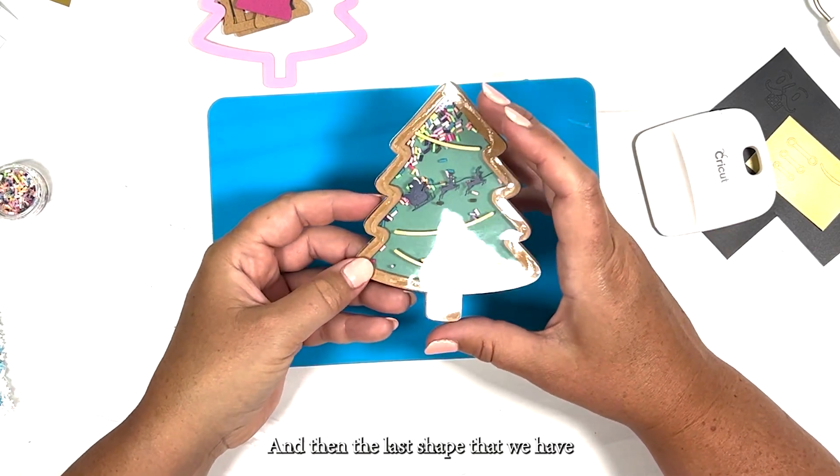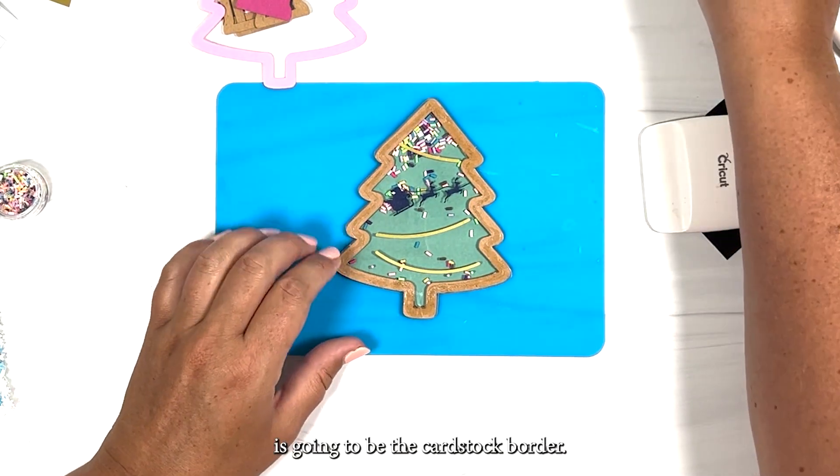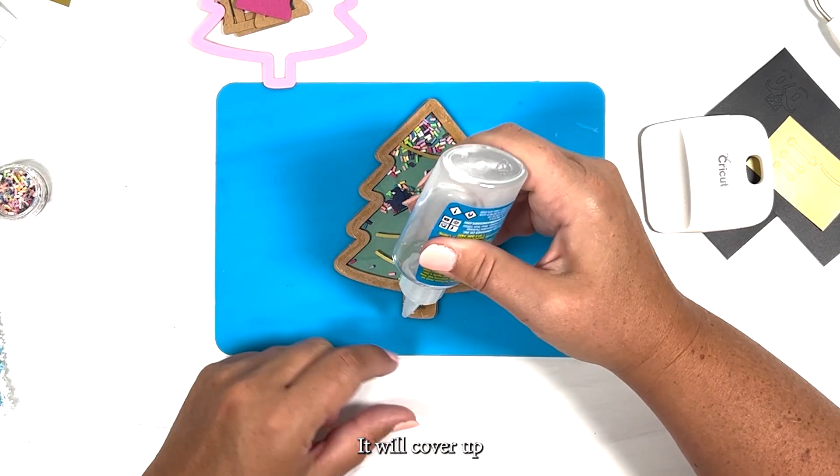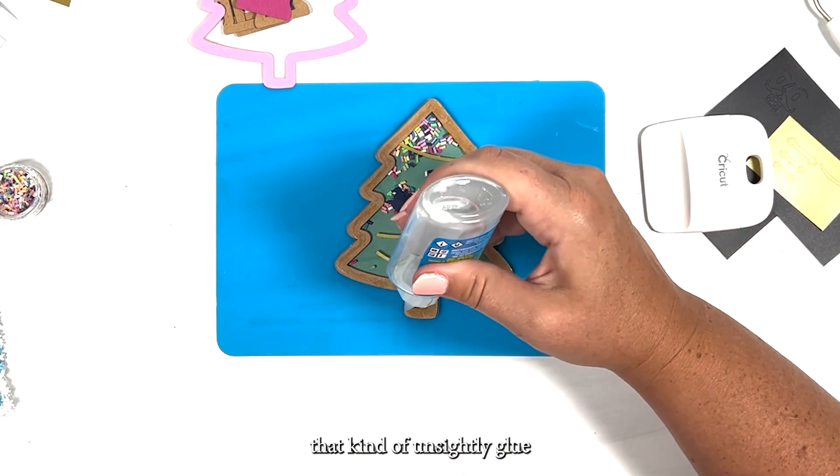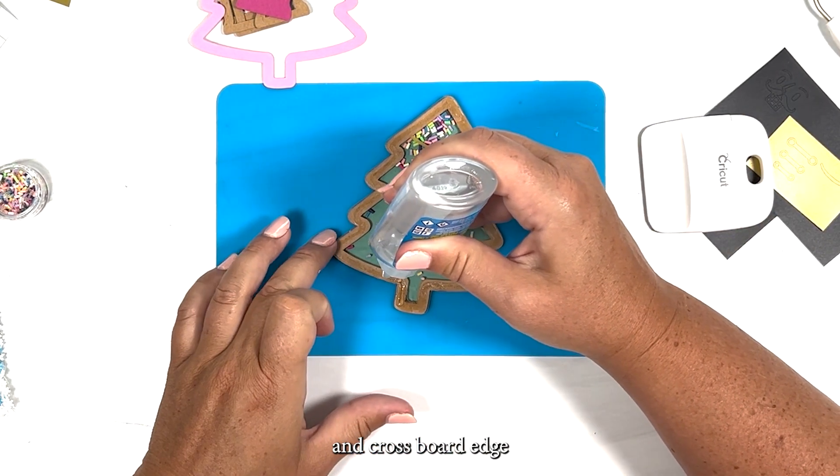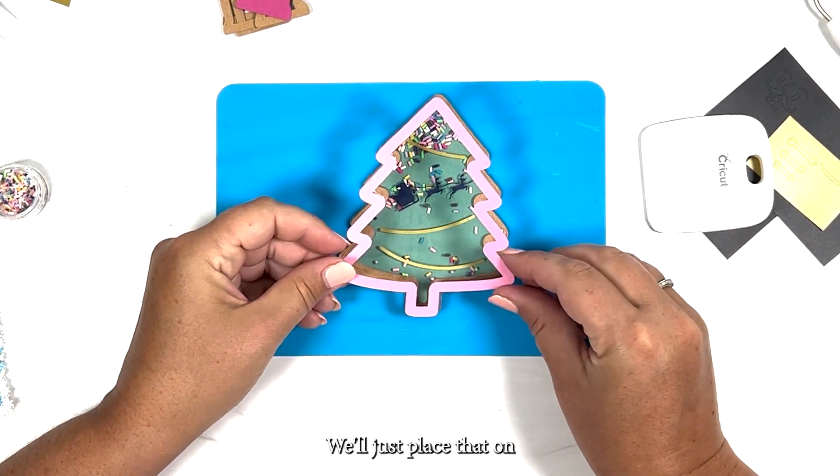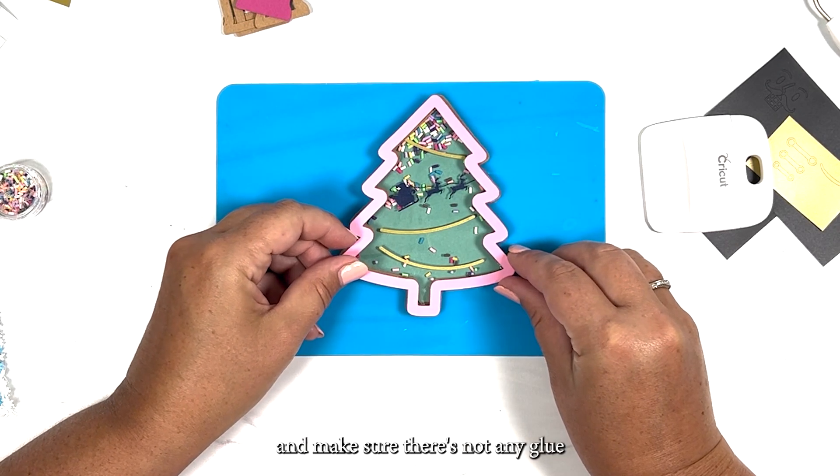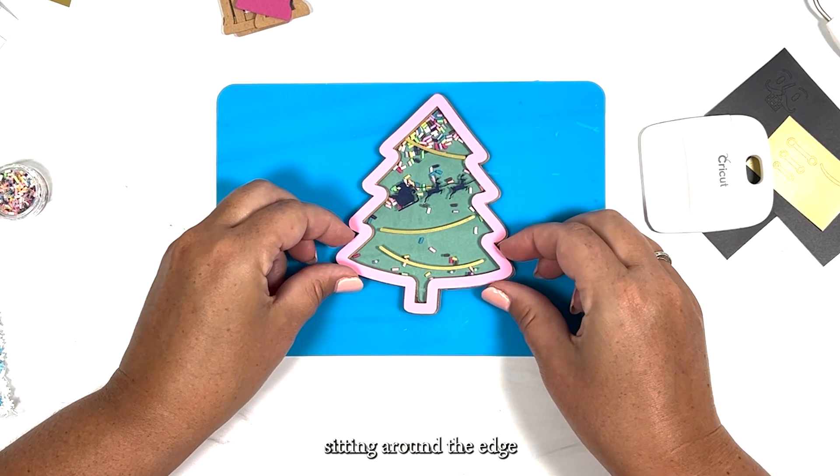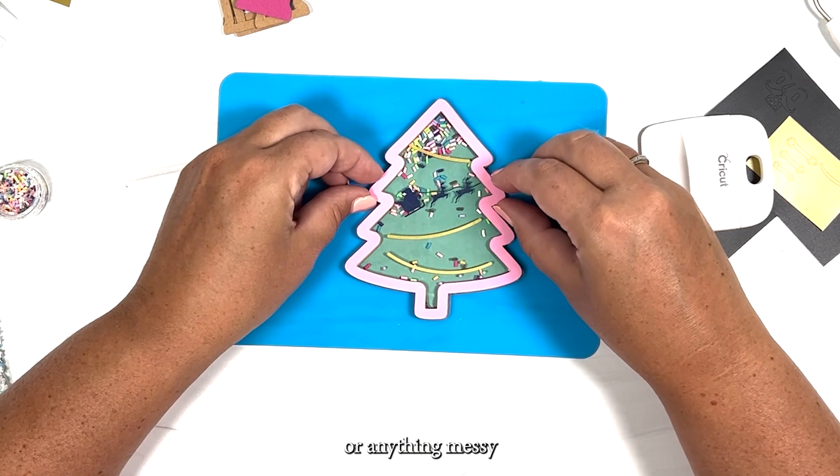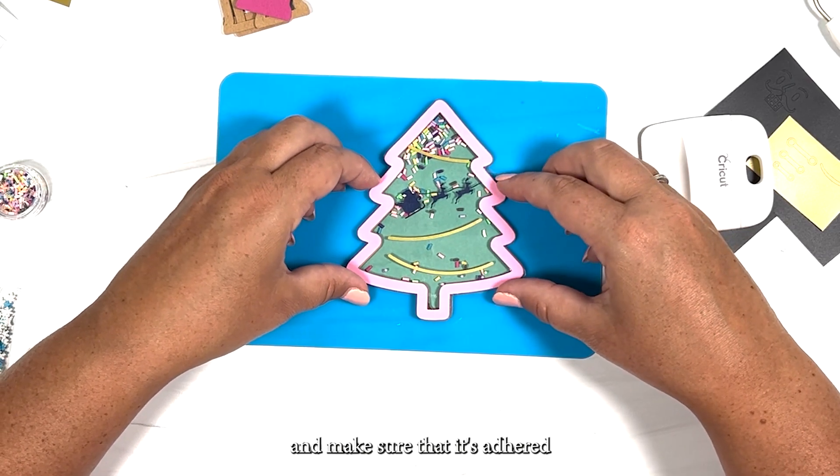And then the last step that we have is going to be the cardstock border. It will cover up that kind of unsightly glue and craft board edge and will give the ornament a finished look. We'll just place that on carefully and make sure there's not any glue sitting around the edge or anything messy and make sure that it's adhered really well.